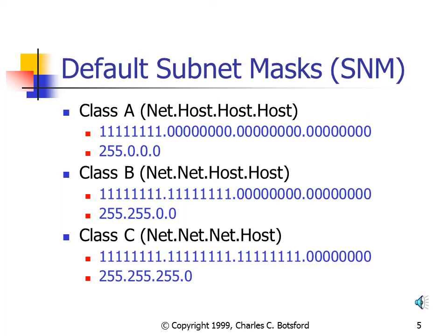Converting those binary values to their associated decimal values: 255.0.0.0 for Class A, 255.255.0.0 for Class B, and 255.255.255.0 for Class C.